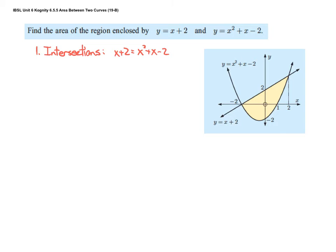On the graph it looks like the intersections are at x = −2 and x = 2. We set the two equations equal to each other — it's a quadratic — subtract the x and subtract the 2, and we have 0 = x² − 4. That means x² = 4, so x = ±2. I know now that I'm going to be taking the integral from −2 to 2.